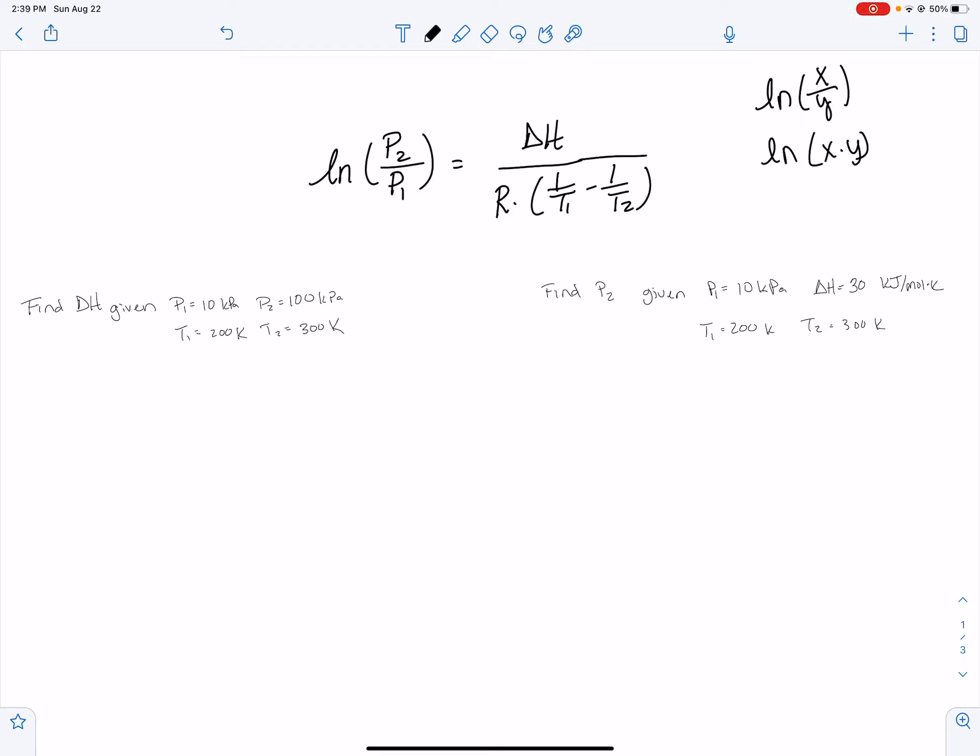So this is our Clausius-Clapeyron equation, and for this equation you generally are going to be solving for two terms, at least in a lab setting. You'll be solving for one or the other of these two terms.